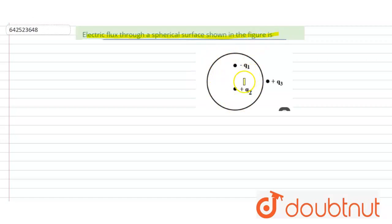Here this is the spherical surface where plus Q2 charge and minus Q1 charge is enclosed by the spherical surface, but Q3 plus Q3 charge is outside the sphere.